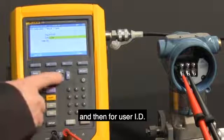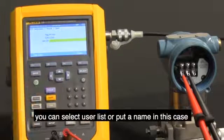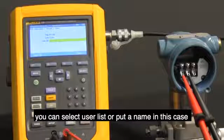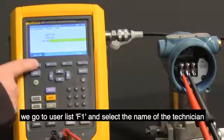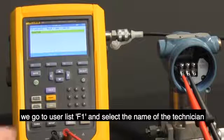And then for user ID, you can select user list or put a name in. In this case, we can go to user list F1 and select the name of the technician.